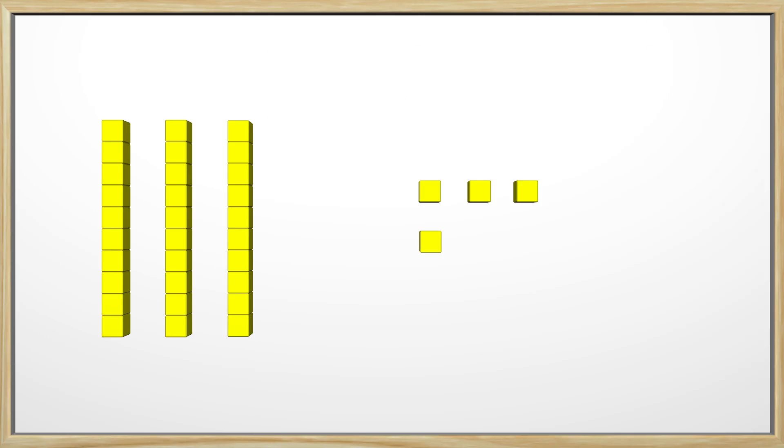Now we can count the ones blocks. We have 1, 2, 3, 4. 34 is how many we have. That was way faster by counting by tens. These tens blocks really do help us. Awesome!